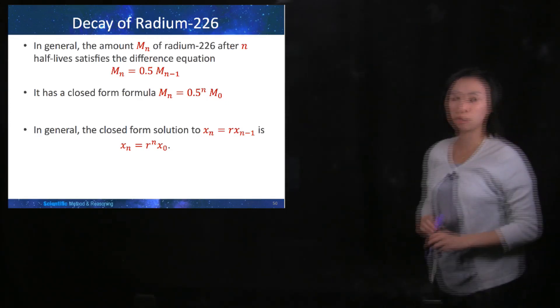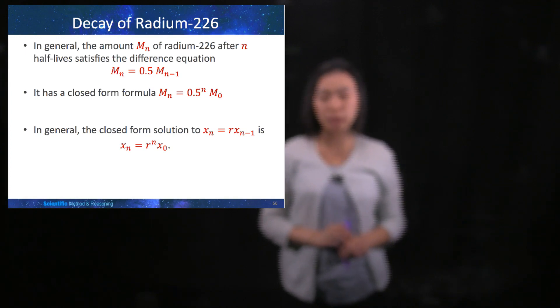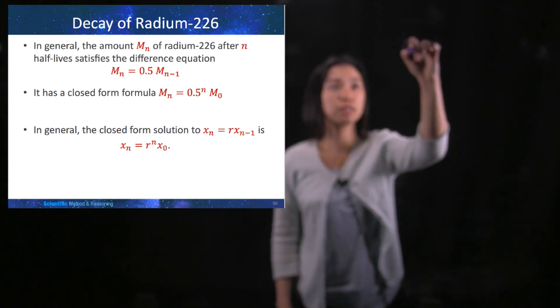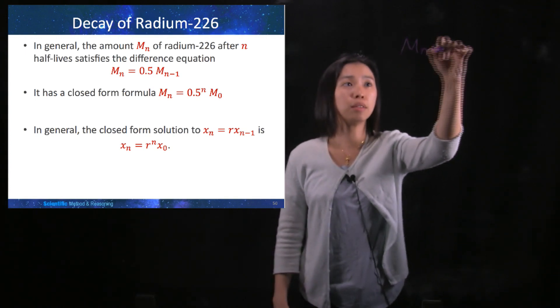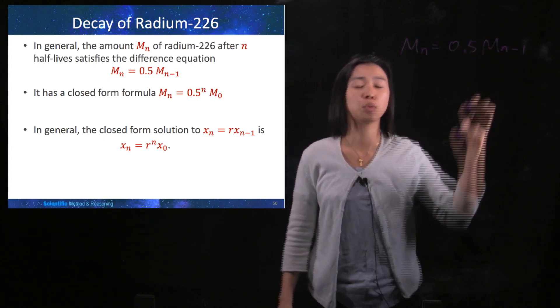In general, the amount Mn of radium-226 after n half-lives satisfies the difference equation Mn = 0.5Mn-1.